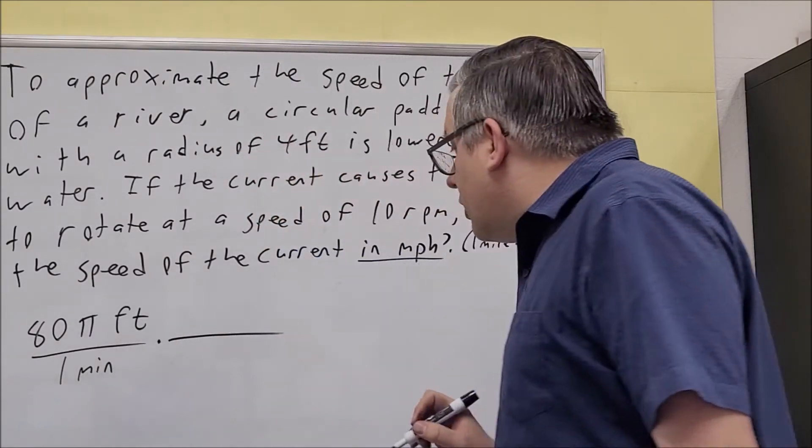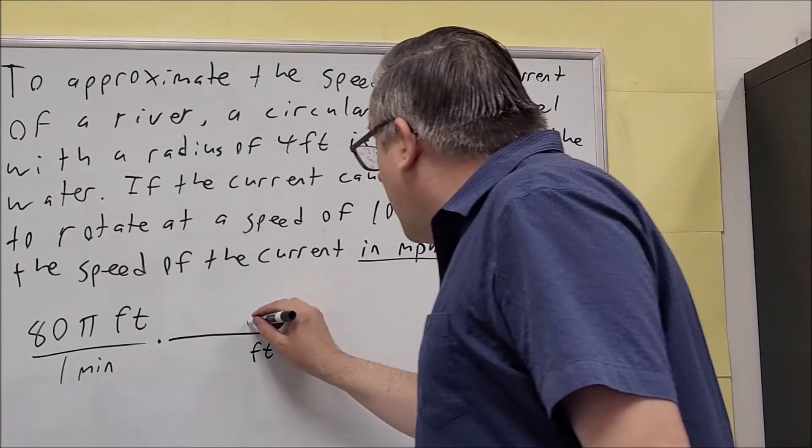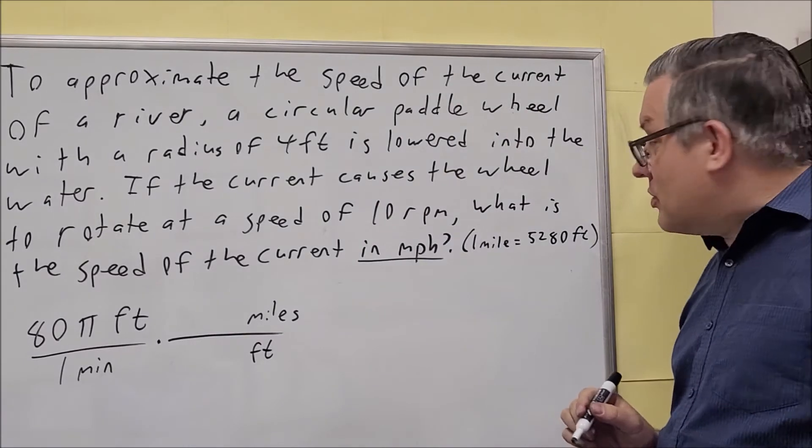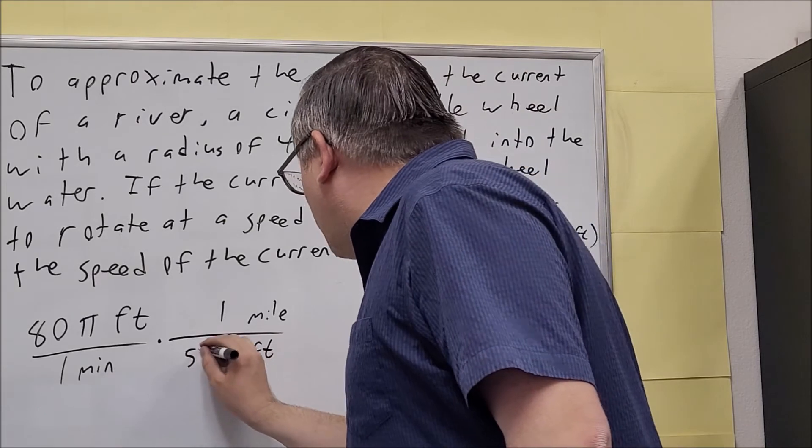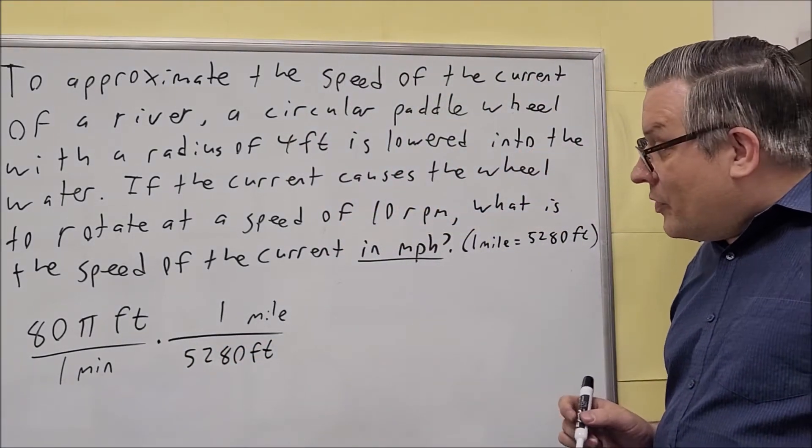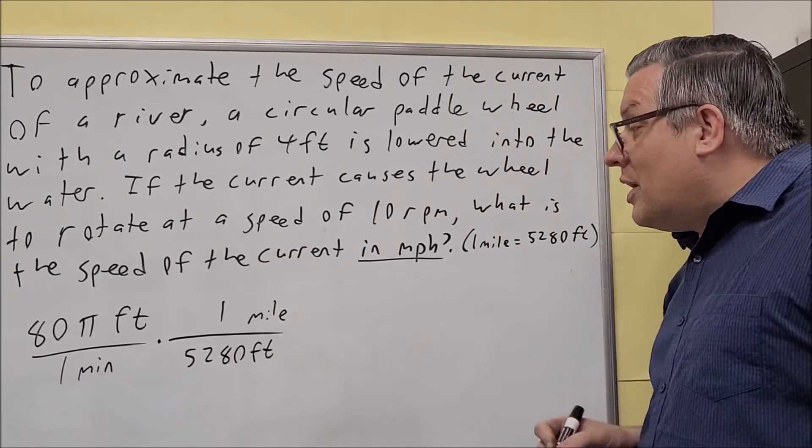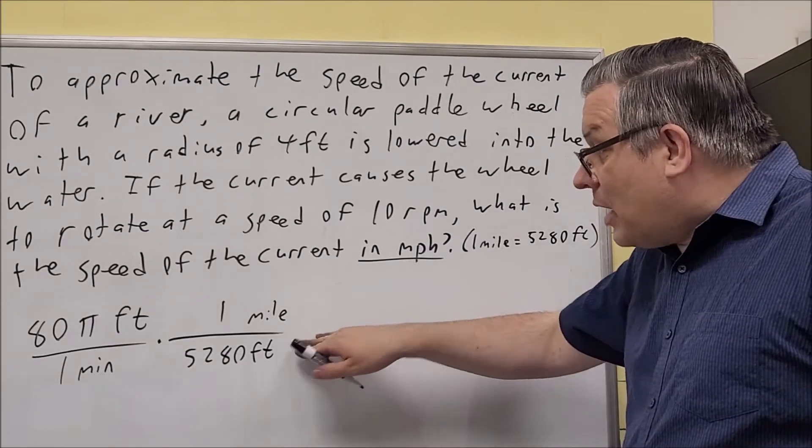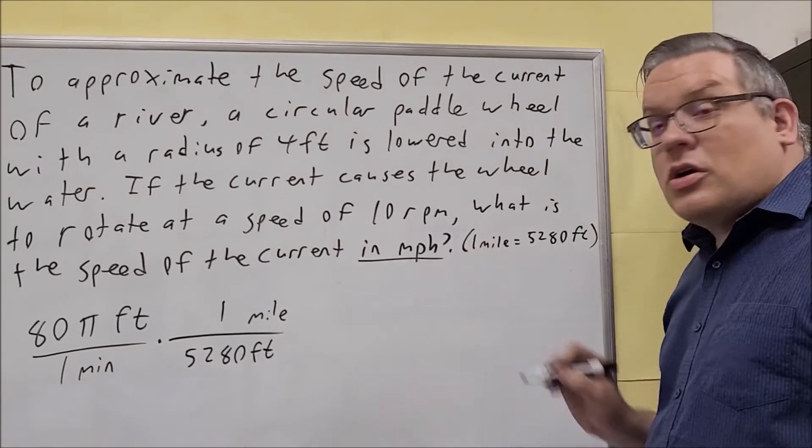So I'm going to put, I want the feet to cancel so I got to put the feet down below here and I want miles on top. So the way we're going to do this is one goes on top here, one mile, and then 5,280 feet goes down below there. So that way the feet are going to cancel and so by doing that conversion I've changed the problem now into miles per minute. They want miles per hour.